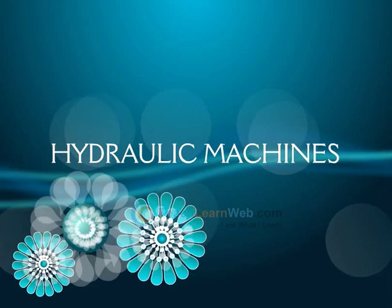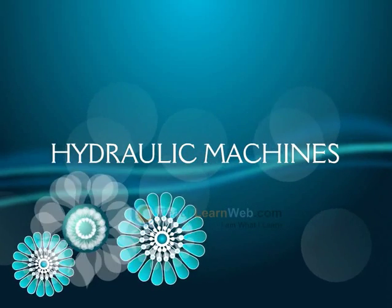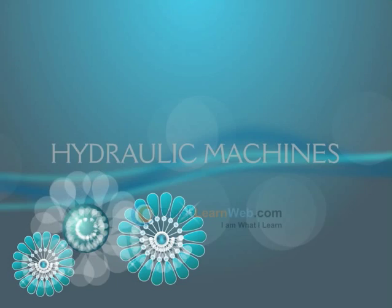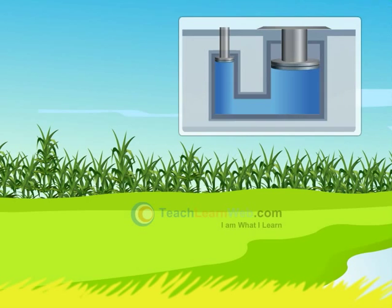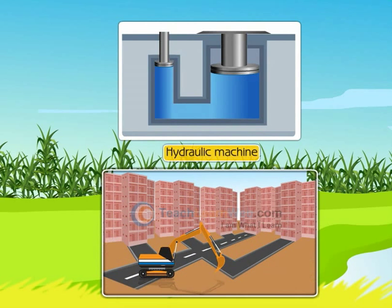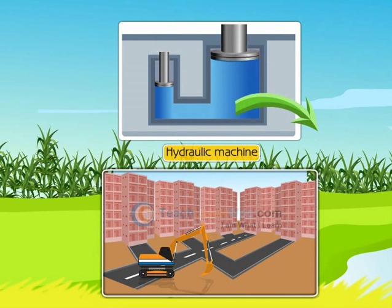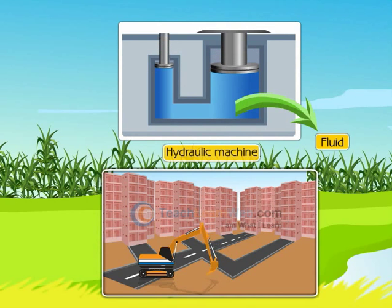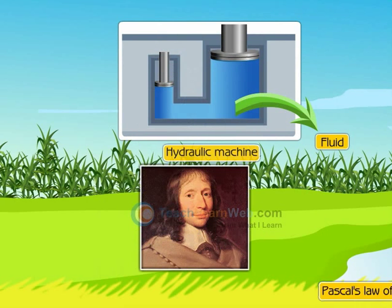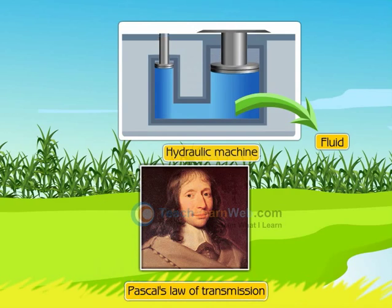Hydraulic machines are machines which lift heavy objects in construction projects. They use fluid power to do work. These machines are based on Pascal's law for transmission of fluid pressure.